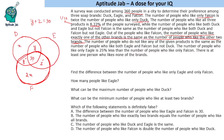The number of people who do not like any of the given products is the same as the number of people who like both Eagle and Falcon but not Duck, so that value is also Z. The number of people who like only Eagle is 25% less than those who like only Falcon. Only Falcon is 2x, so only Eagle is 1.5x.